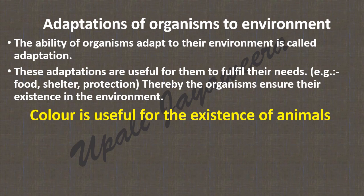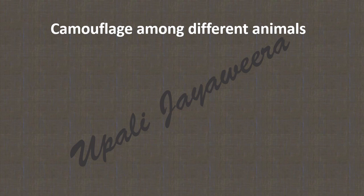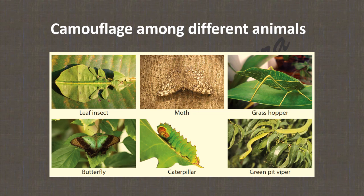Colour is useful for the existence of animals. Most of the time, the colour of animals blends with their living environment, so an animal cannot easily be identified by predators and will be protected. This is camouflage. Here you can see leaf insects, moth, grasshopper, butterfly, caterpillar, and green pit viper — their body colour matches the colour of their environment.